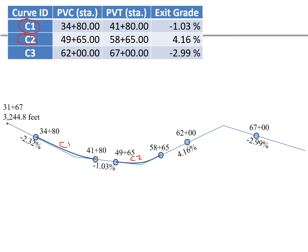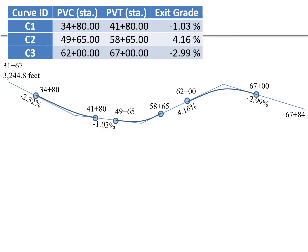For curve C3, the PVC station is 62 plus 00 and the PVT station is 67 plus 00, with an exit grade of negative 2.99 percent and a curve to connect that. The overall alignment ends at station 67 plus 84, and we're looking for the elevation at that endpoint. So we have our three curves C1, C2, and C3 drawn with their grades, PVCs, and PVTs located.